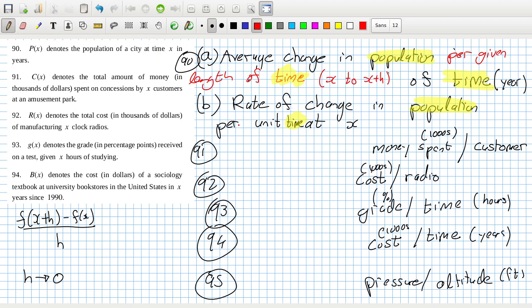So we can fix this up much better. Average change of population for given length of time, and that would be x to x plus h. Yeah, it would be x to x plus h, and I'd be changing the word time here. So let's see if that gels with the other ones. Rate of change in population per unit time at x, so that's still fine in 91. Average change in money spent per length of customer. Yeah, it sounds weird to say length of customer, doesn't it? Maybe better to say, instead of customer, per number of customers. And this could be per number of radios, but the rest of the same length of, and rather than per length of time, per length of altitude.